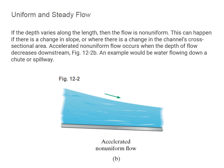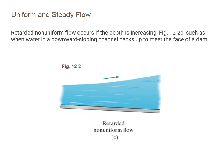If the depth varies along the length, the flow is non-uniform. This can happen if there is a change in slope or a change in the channel's cross-sectional area. Accelerated non-uniform flow occurs when the depth of flow decreases downstream — an example would be water flowing down a chute or spillway. Retarded non-uniform flow occurs if the depth is increasing, such as when water in a downstream sloping channel backs up to meet the face of a dam.